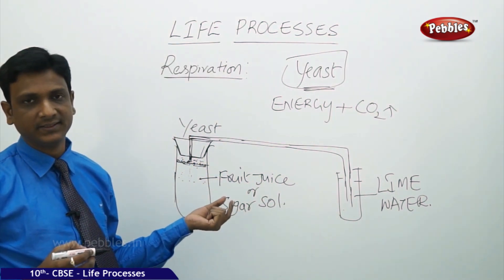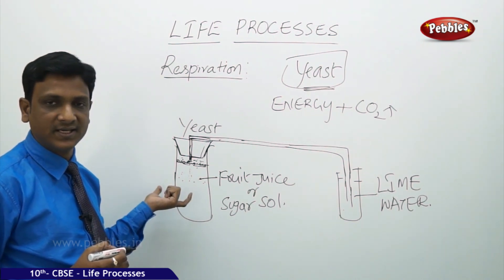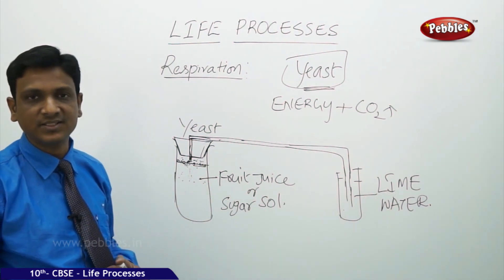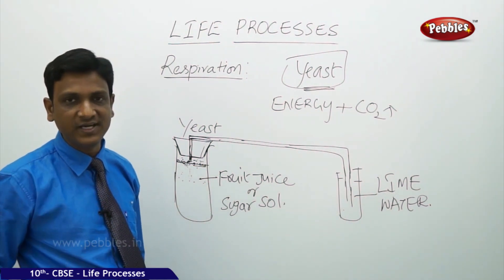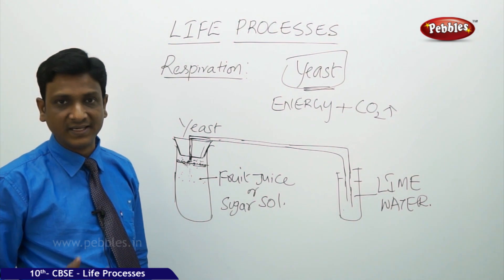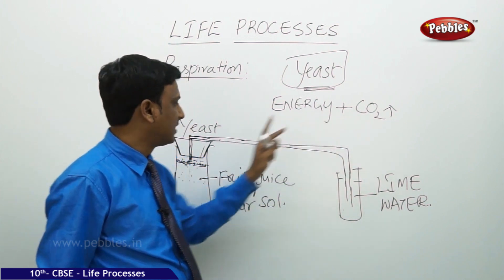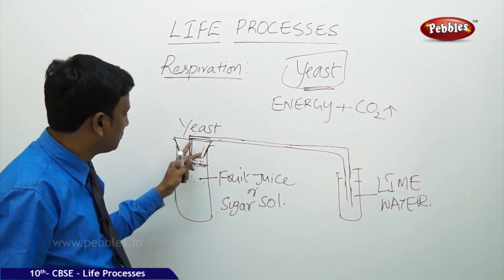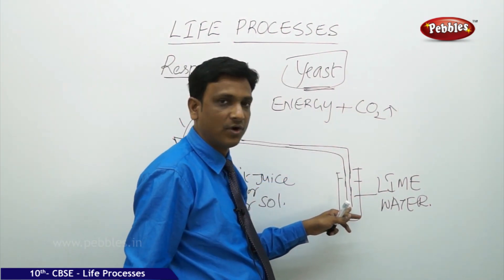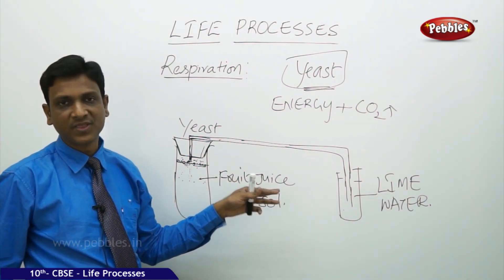Yeast are organisms that carry out respiration when food is available. The fruit juice contains sugars on which the yeast feeds. Yeast converts the sugars to alcohols, and in this process energy is liberated. Along with energy, carbon dioxide is released. This carbon dioxide gas is captured and passes through the tube into the lime water, where it reacts with lime water to form calcium carbonate and turns the lime water milky.